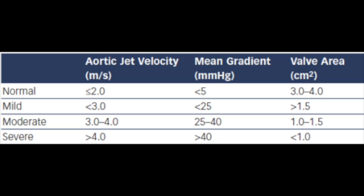On echo, assess valve area, left ventricular wall thickness, left ventricular hypertrophy, and ejection fraction. The grading is as follows: Normal valve area 3–4 cm², gradient <5 mmHg, velocity <2 m/s. Mild AS: valve area >1.5 cm², gradient <25 mmHg, jet velocity <3 m/s. Moderate AS: valve area 1–1.5 cm², gradient 25–40 mmHg, jet velocity 3–4 m/s. Severe AS: valve area <1 cm², mean gradient >40 mmHg, jet velocity >4 m/s.